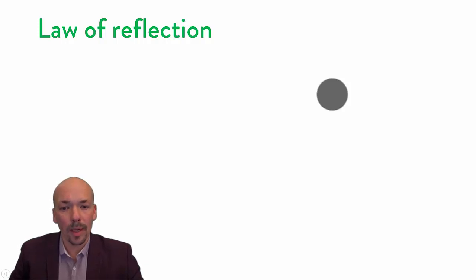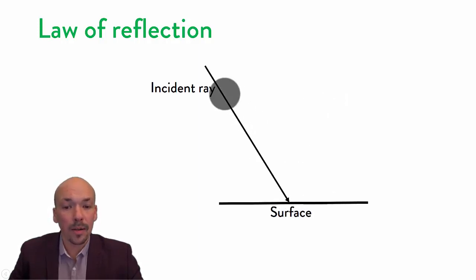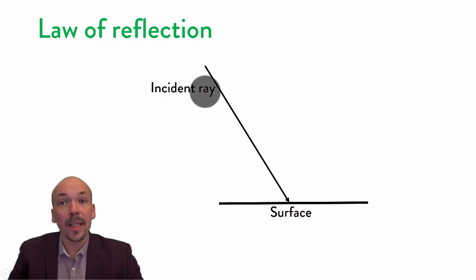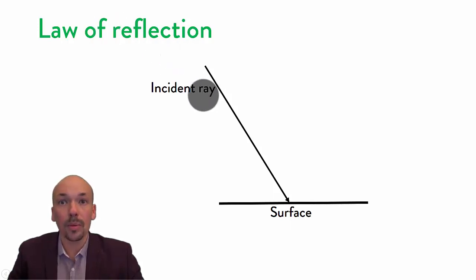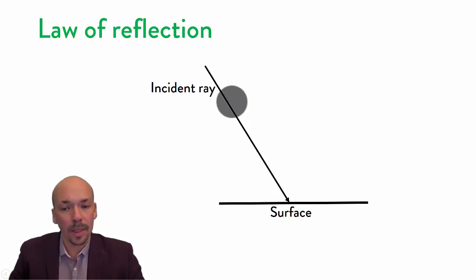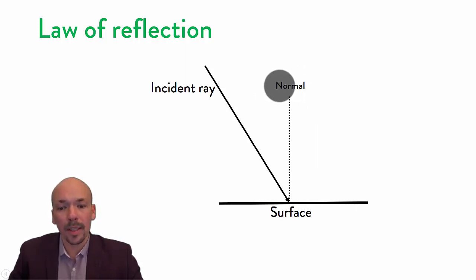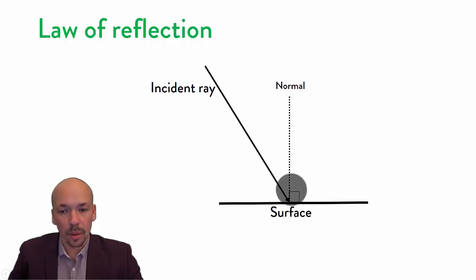What's the law of reflection? If you have a surface and you have a light ray coming onto the surface, also known as the incident or the incoming ray, then it will be reflected, and there is a certain rule to it. To determine the reflection, you first have to determine the normal. The normal is a line that helps you with the reflection, and it's always perpendicular to the surface — at an angle of 90 degrees.